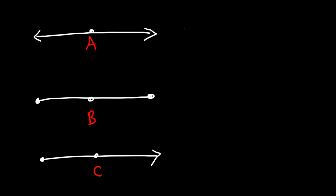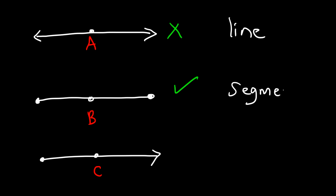Point A is not a midpoint because we have a line. B is a midpoint because B divides the segment into two congruent segments. So midpoints are always found on segments. C is not a midpoint because it's on a ray, not on a segment.